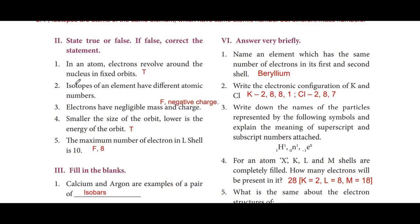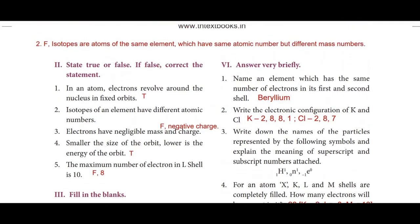Section 2: State true or false; if false, correct the statement. First: In an atom, electrons revolve around the nucleus in fixed orbits — True. Second: Isotopes of an element have different atomic numbers — False. Isotopes are atoms of the same element which have the same atomic number but different mass numbers.